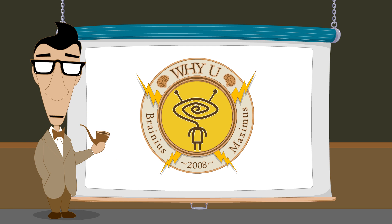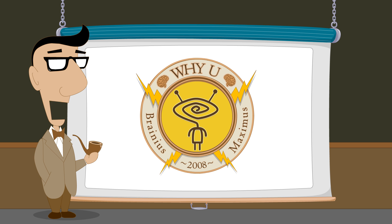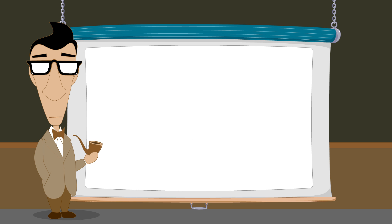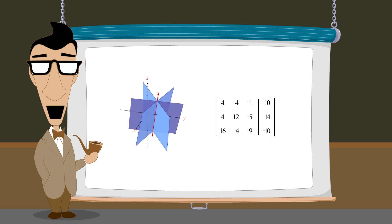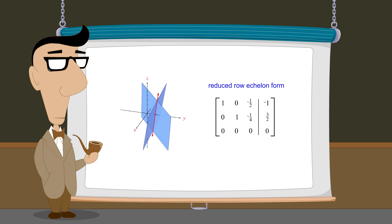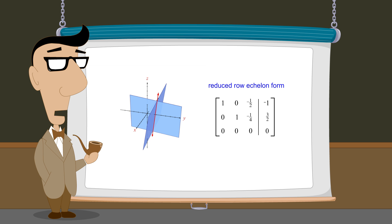Hello, I'm Professor Von Schmohawk and welcome to Why U. In the lecture entitled 'Describing Infinite Solution Sets Parametrically,' we saw how infinite solution sets could be described using parametric equations. In this lecture, we will show that once an augmented matrix representing a system of equations with infinitely many solutions has been transformed to reduced row echelon form, it is especially easy to produce a parametric description of those solutions.